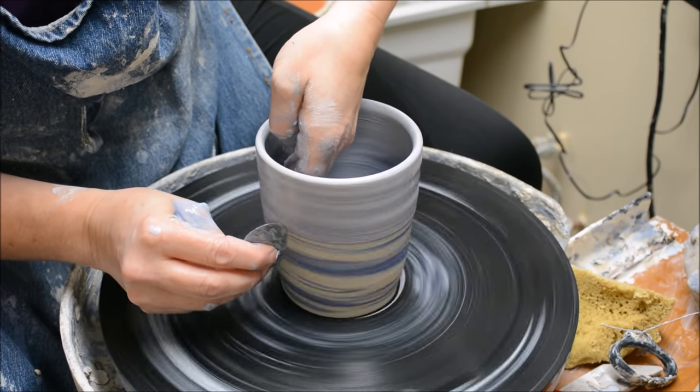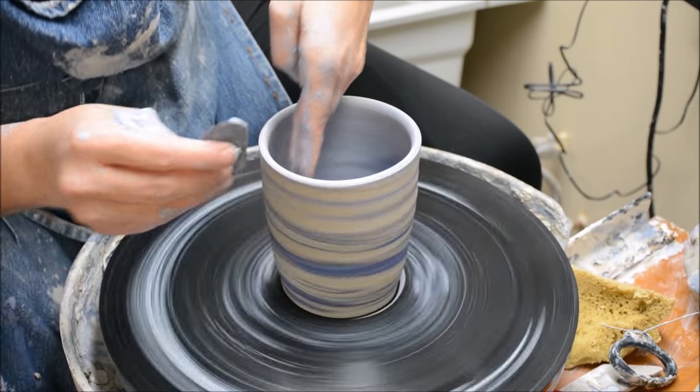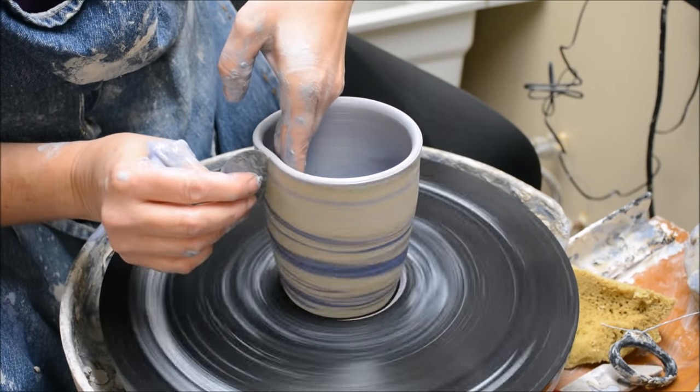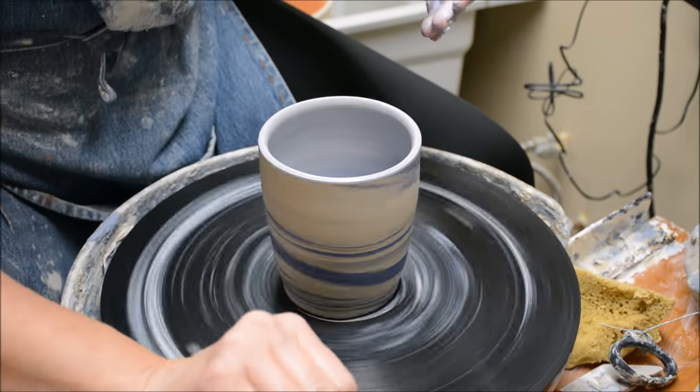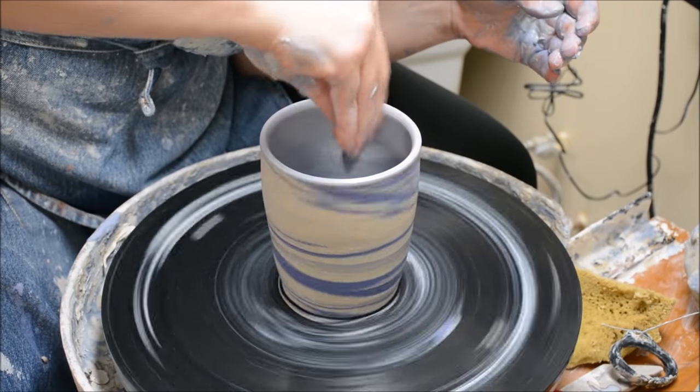Now I am just going to rib or scrape the exterior. That's removing the extra slip that's on the outside. And as soon as you remove that extra slip, you can see the nice coloration of the stain and the clay.